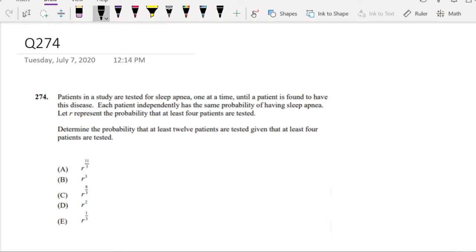So, patients in the study are tested for sleep apnea one at a time until a patient is found to have this disease. Each patient independently has the same probability of having sleep apnea. Let R represent the probability that at least 4 patients are tested.